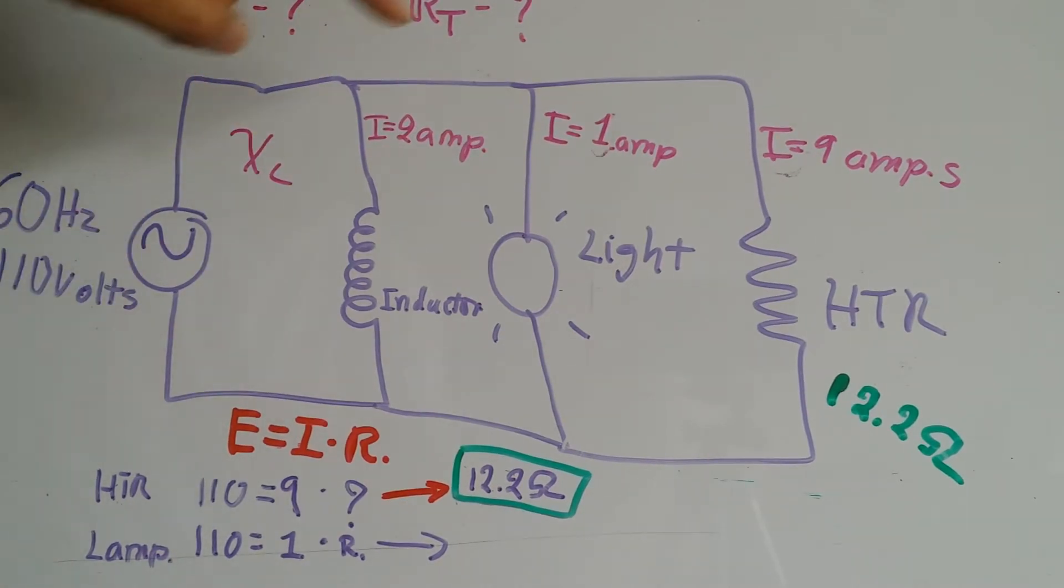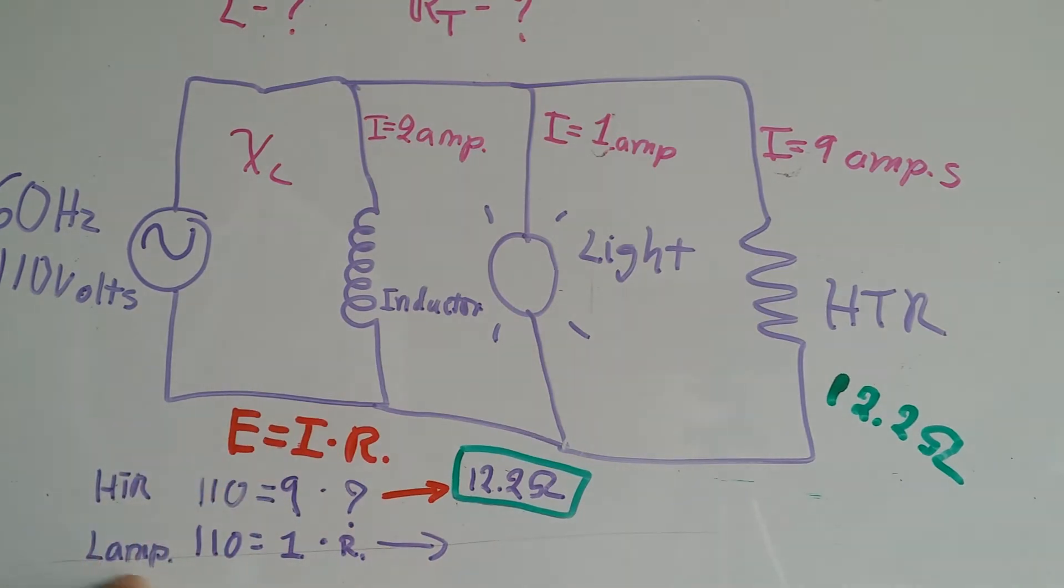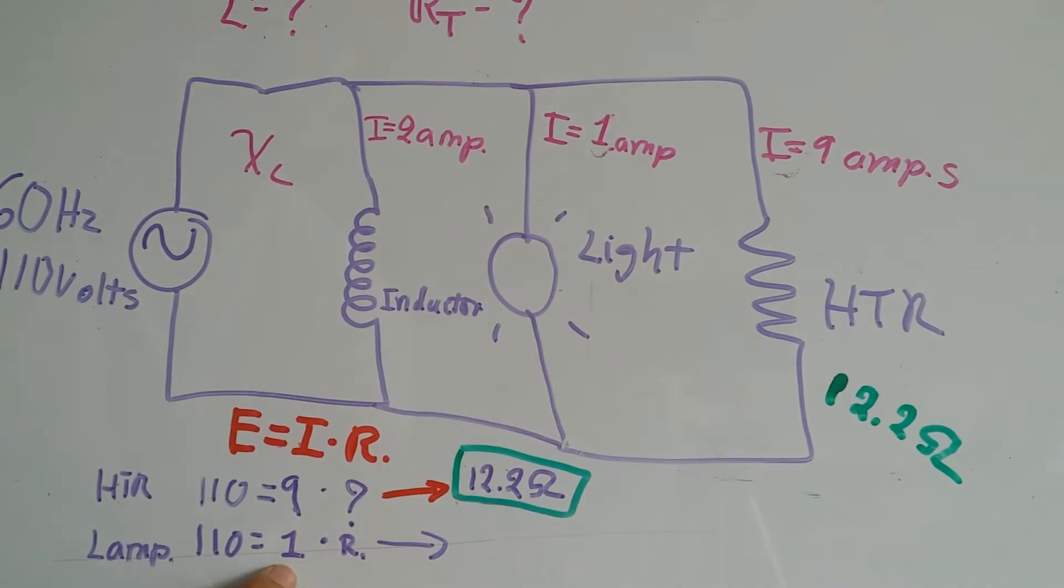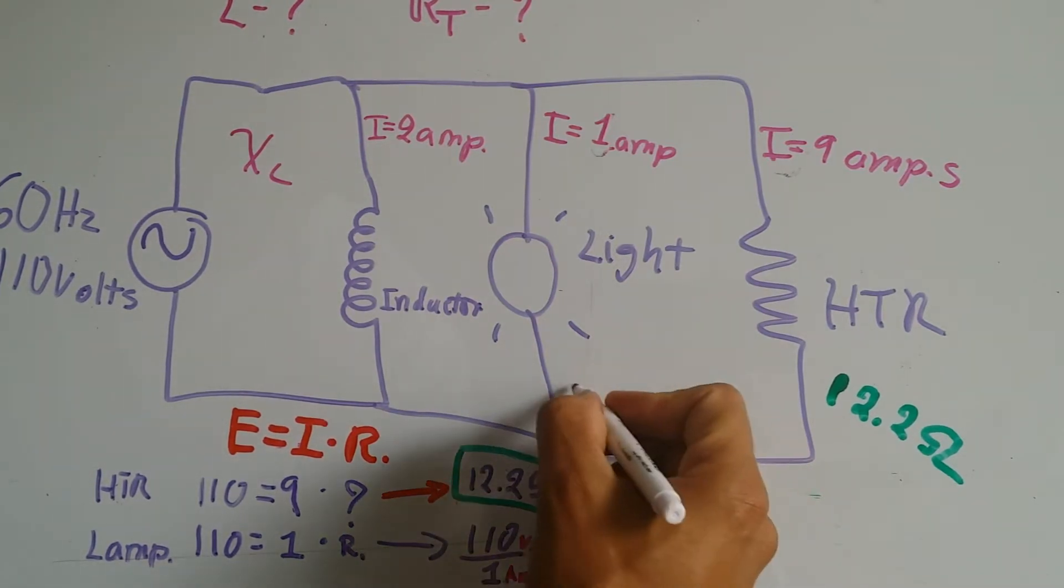When we go over to the lamp, we also got 110 volts to it, and the current through that branch is 1 amp. Resistance is what I don't know. Once I rearrange my equation, 110 volts divided by 1 amp gives me 110 ohms, so the light has a resistance of 110 ohms.